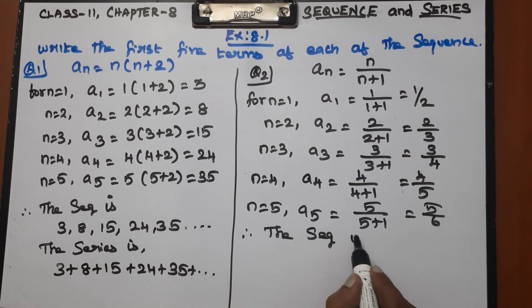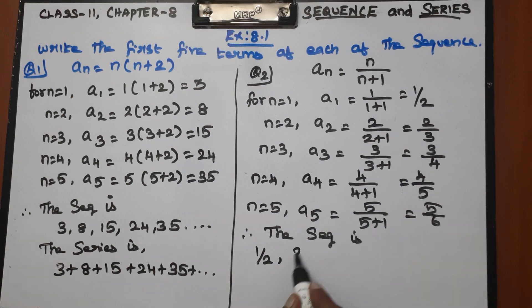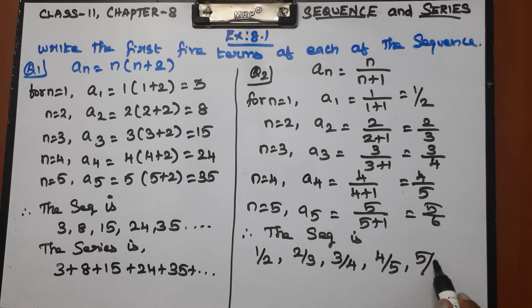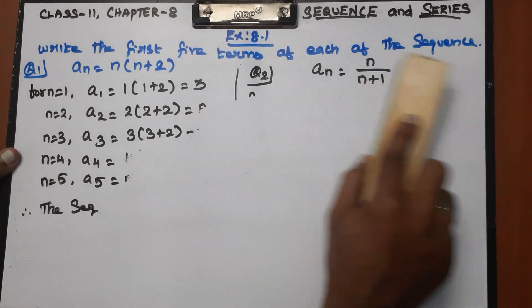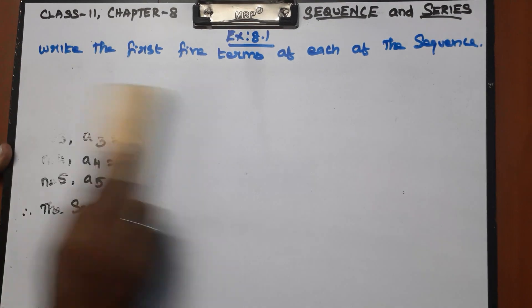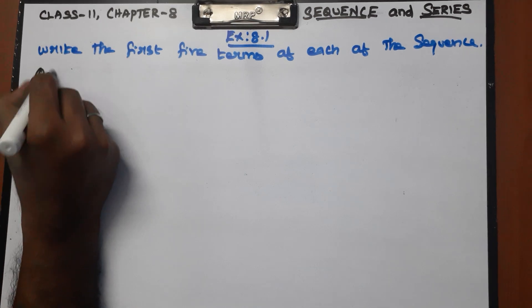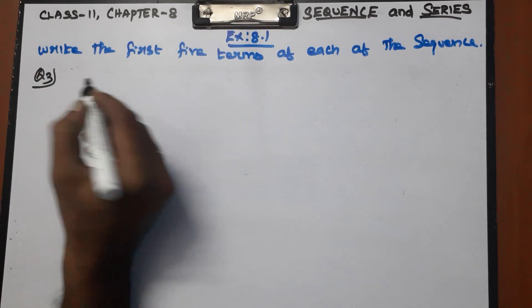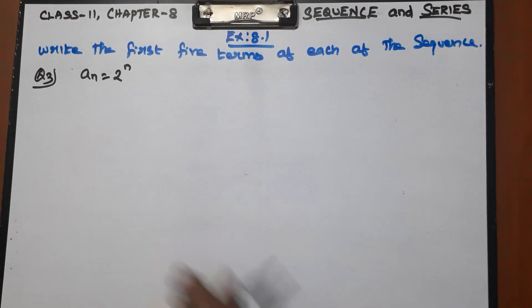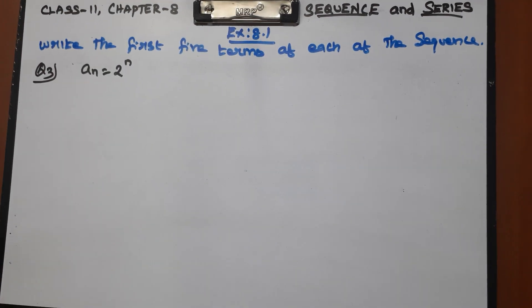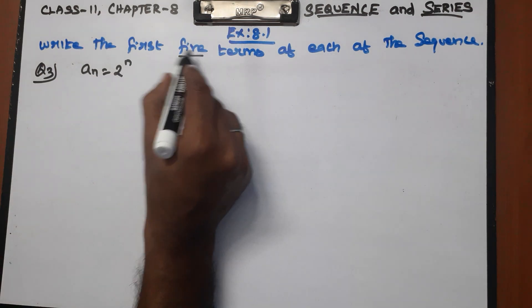The sequence of the given nth term is: first term 1/2, second term 2/3, third term 3/4, fourth term 4/5, fifth term 5/6. These are the first five terms.